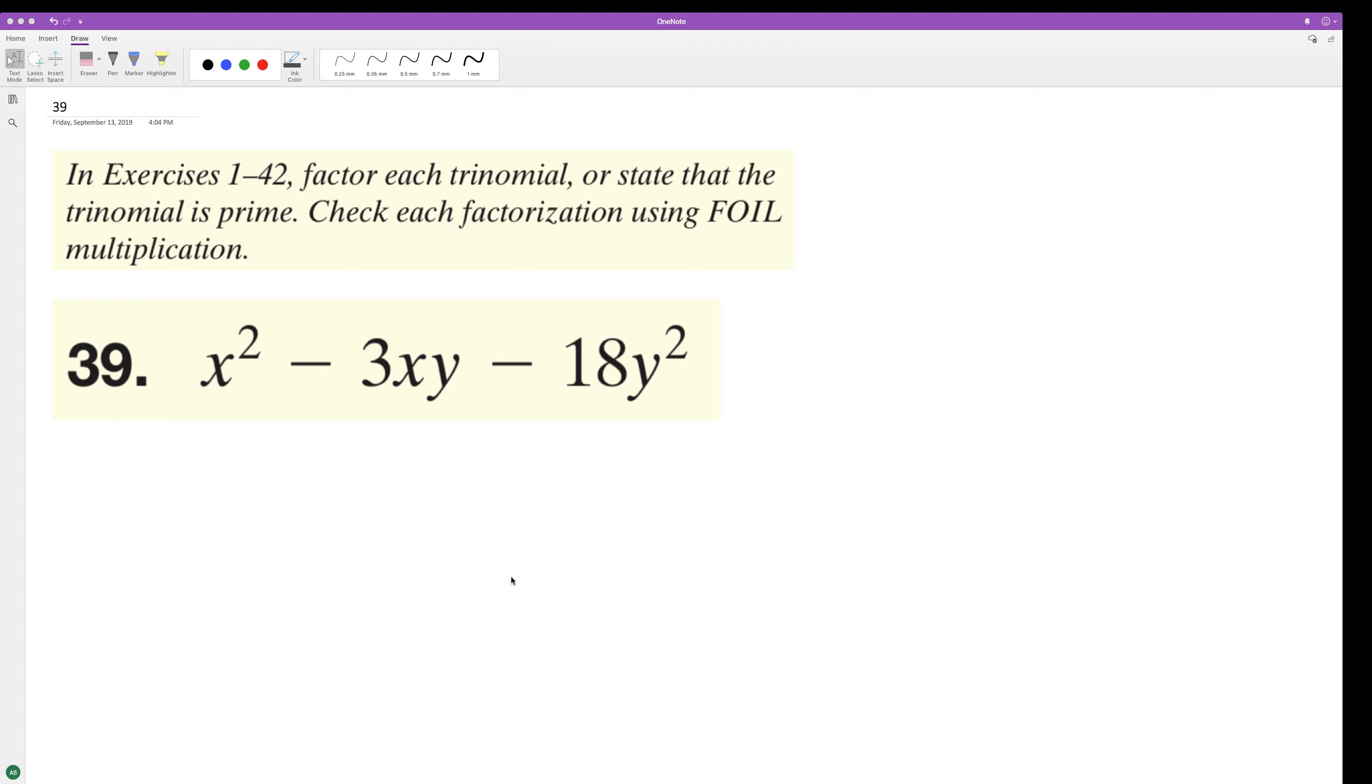Factor the following trinomial, then check it. So what we're going to do here is we need a middle term, well, two factors when added together equal negative three, and when multiplied equal negative 18. So it looks like